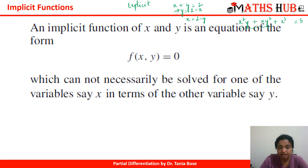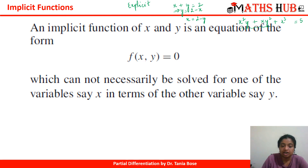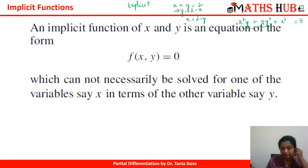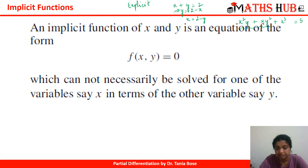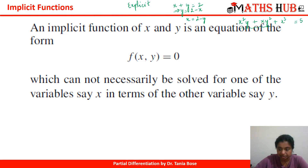An implicit function of x and y is an equation of the form f(x, y) = 0 which cannot necessarily be solved for one of the variables in terms of the other. When you are able to express one variable in terms of the other, it is an explicit relation; otherwise it is called an implicit relation.